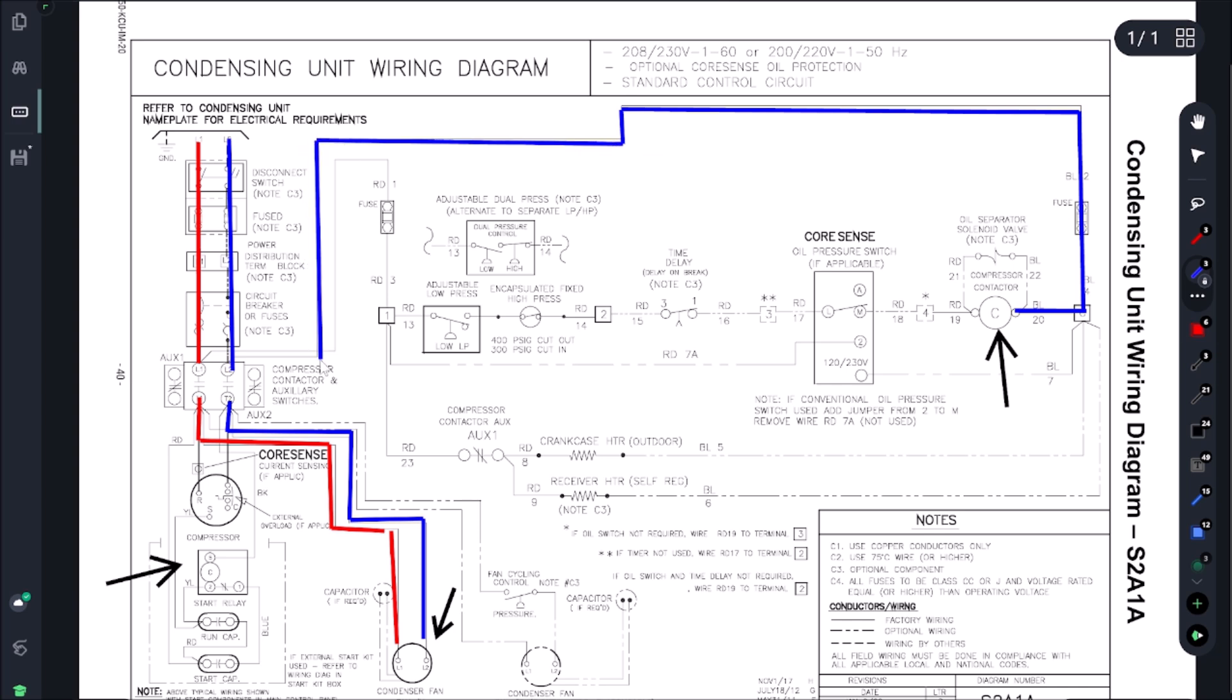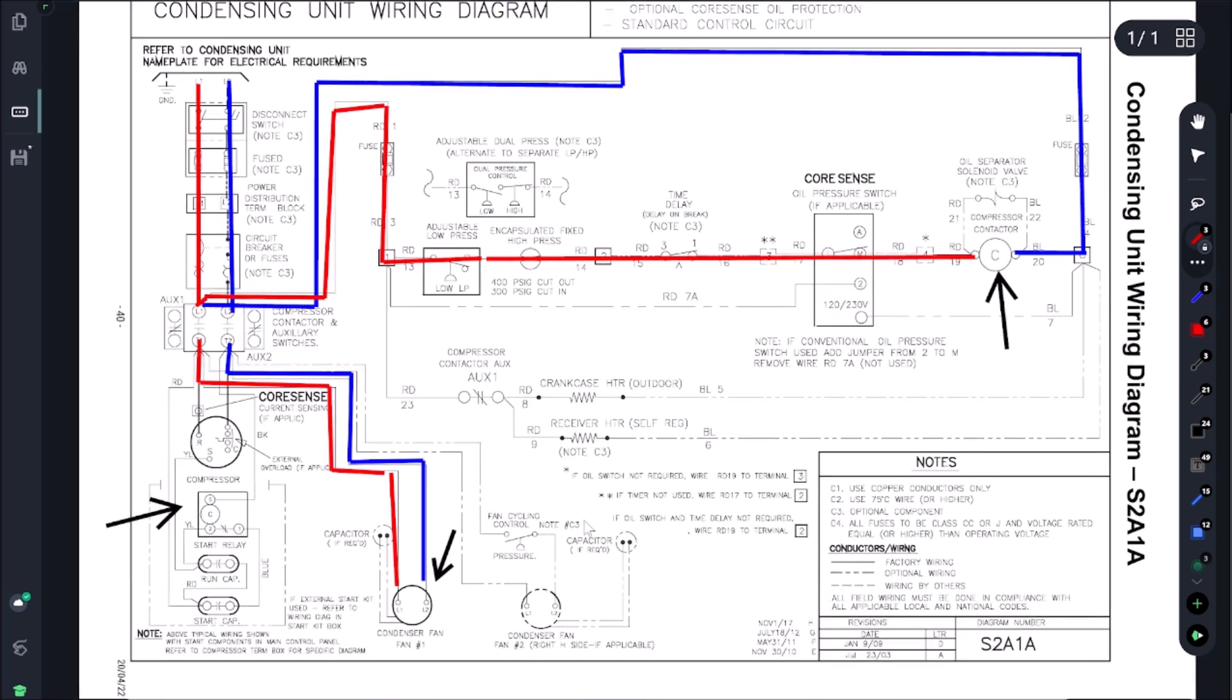And if our contactor's closing, what does that mean about our contactor coil? Well, it's got to be energized, right? So that means we can literally come here and draw out this entire circuit. So that means our fuse is good there. And then on our other side, it means we don't have an oil pressure switch, we don't have a time delay. We do have a low pressure switch that tells us it is closed, and it tells us this fuse is good.